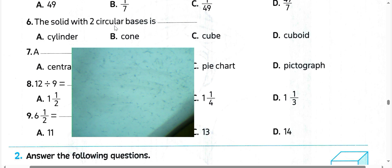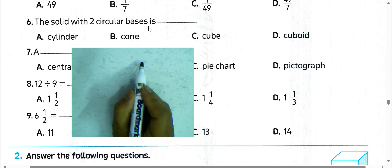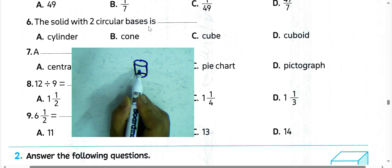The solid with 2 circles in the base, we call it cylinder. Choose letter A.